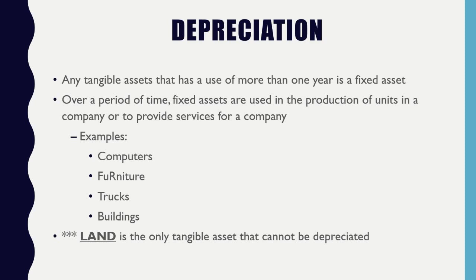Plant refers to your building and everything inside it — furniture, lamps, desks, and chairs. Equipment refers to any type of machinery that helps you operate your business, such as a refrigerator, microwave, or any kind of electrical appliance.